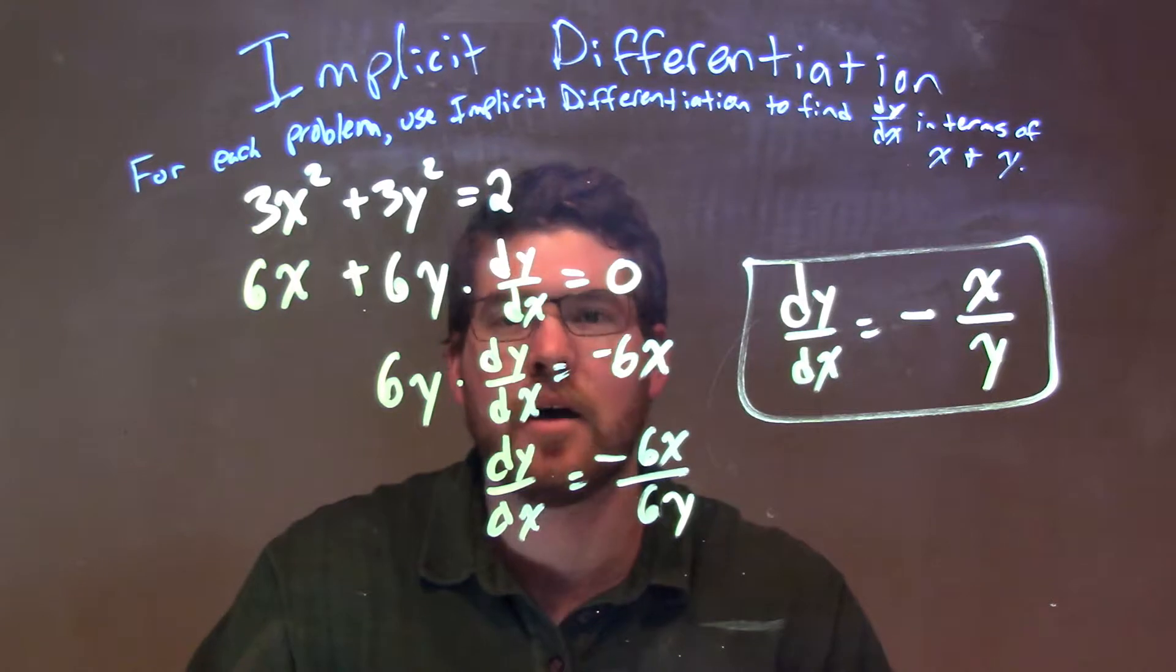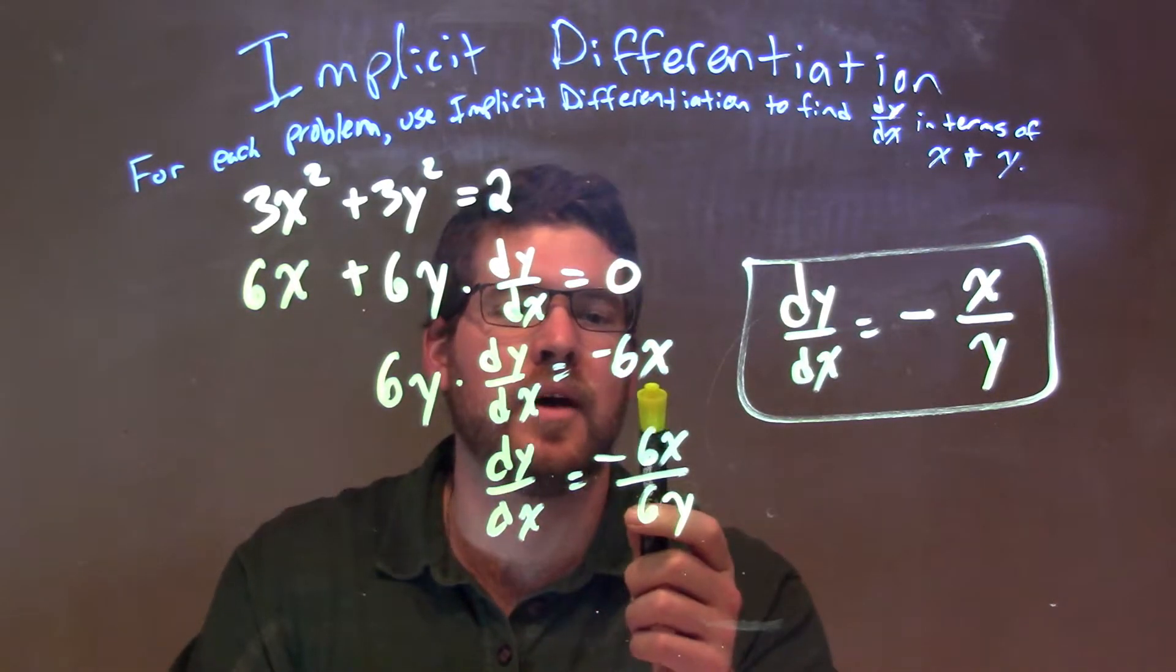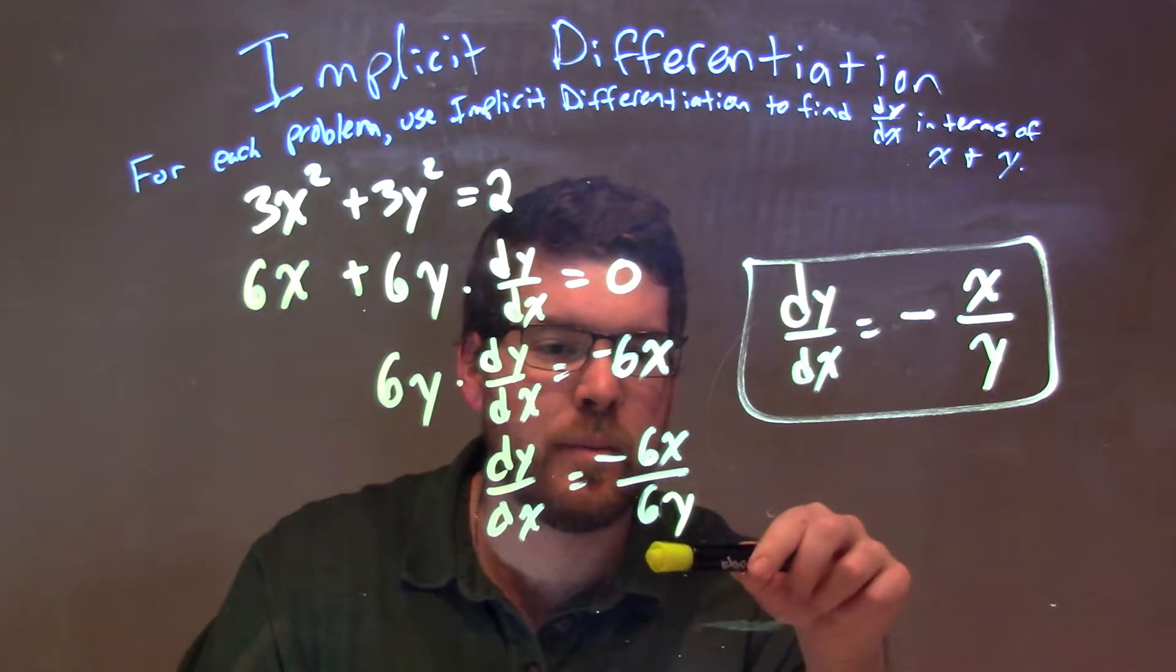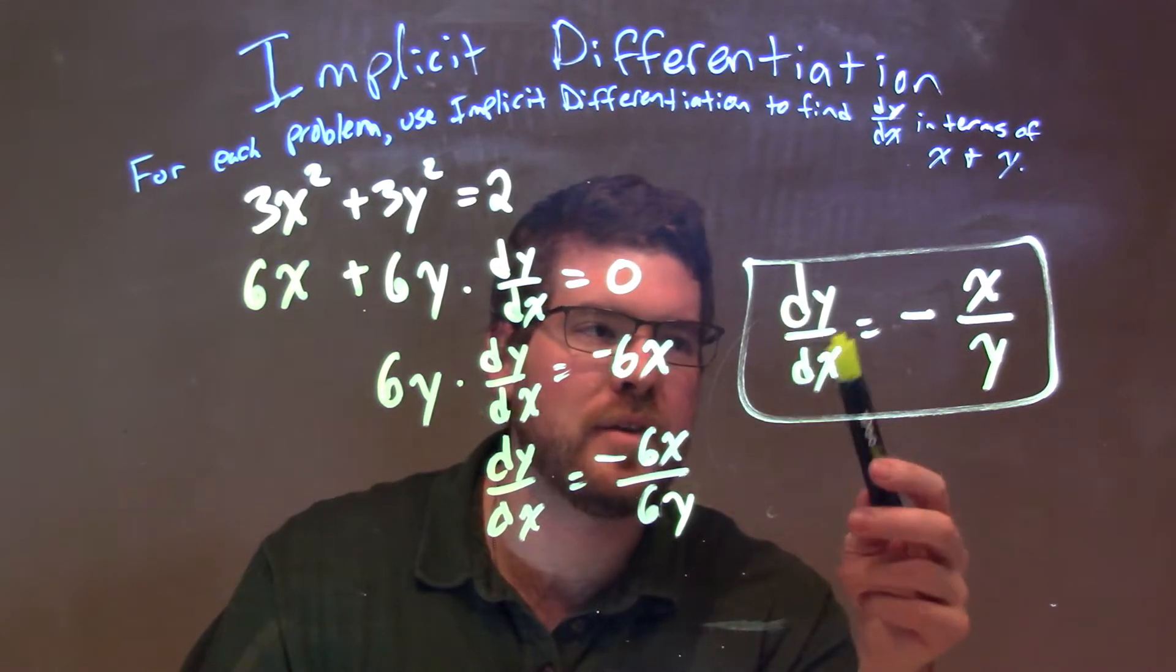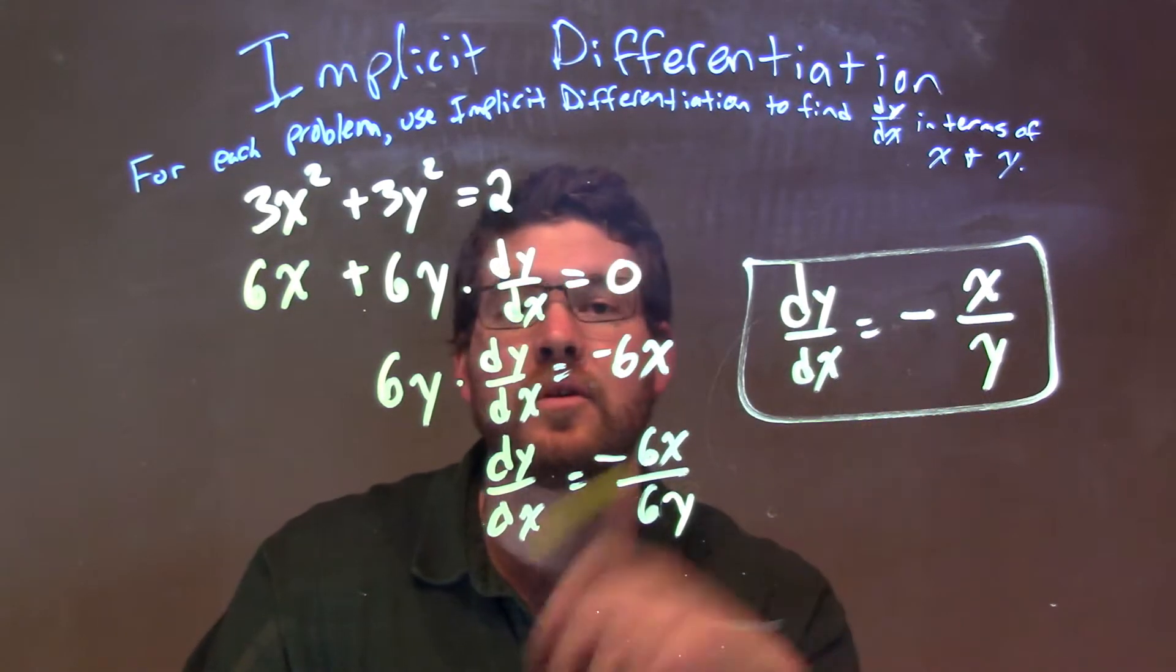So now we're just getting dy/dx by itself. I subtracted 6x from both sides. Then I divided by 6y. We simplified that and got our final answer of dy/dx is equal to negative x over y.